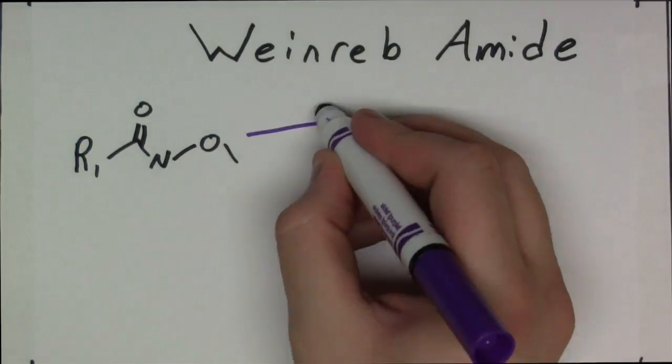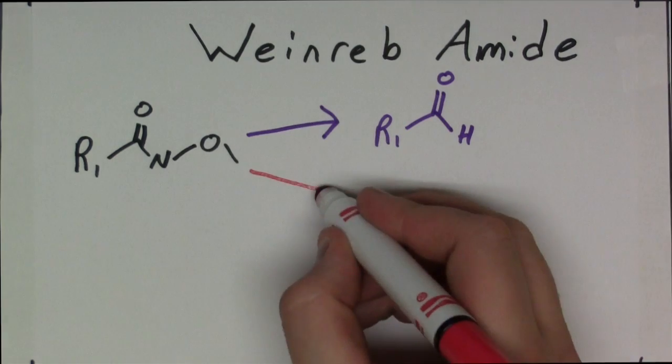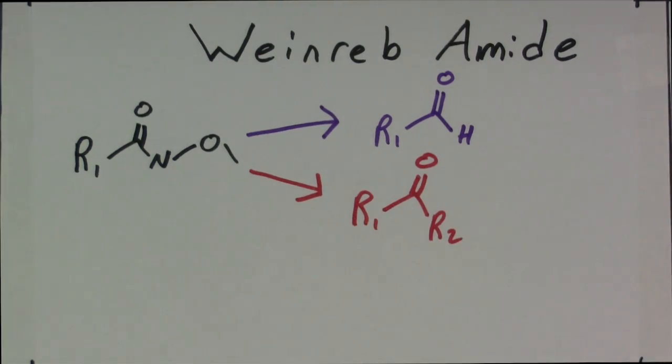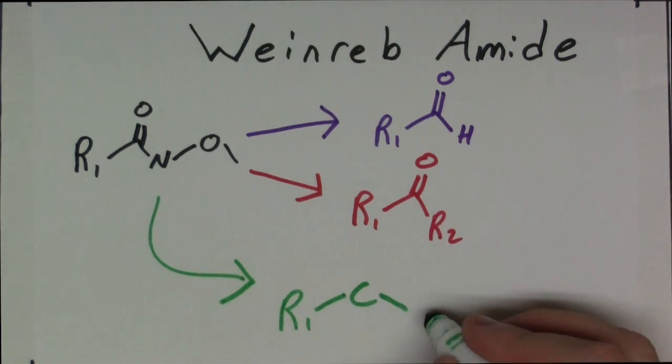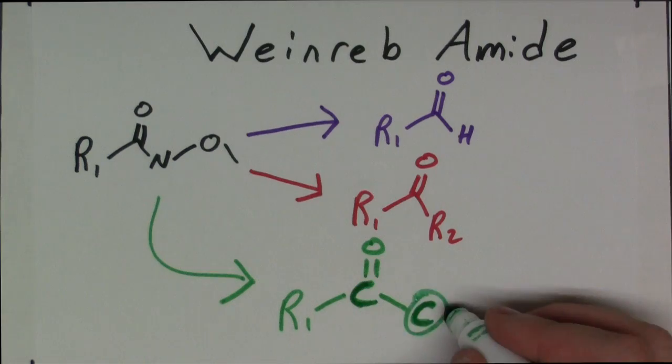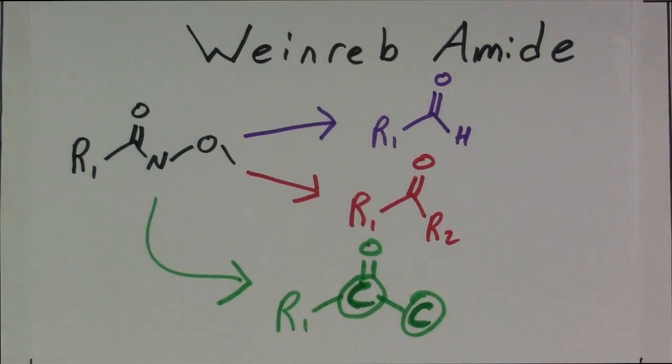In summary, the Weinreb amide is excellent at forming aldehydes, ketones, and carbon-carbon bonds from carboxylic acid derivatives, providing leverage to chemists for new synthetic strategies.